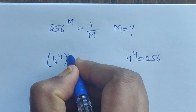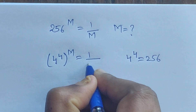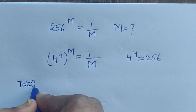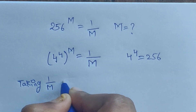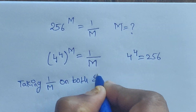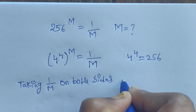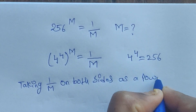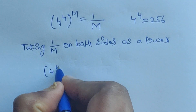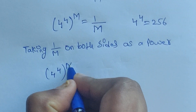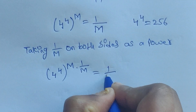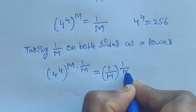So 4 to the power of 4, whole to the power of m, equals 1 divided by m. Now taking 1 divided by m on both sides as a power. So 4 to the power of 4, whole to the power of m times 1 divided by m, equals 4 to the power of 1 divided by m.